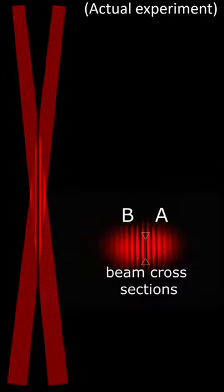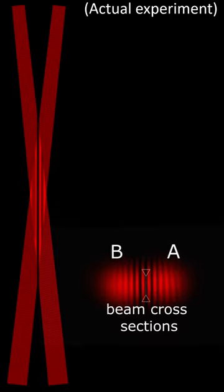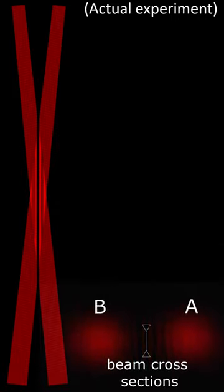So my question to you is, how can the energy in each of the beams cross a continuous plane of zero intensity?